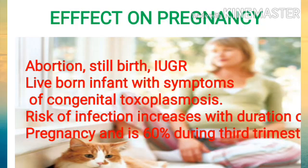The effect of toxoplasmosis on pregnancy: it either causes abortion, stillbirth, or intrauterine growth retardation. If the lady gives birth to a live-born infant, that infant is affected with congenital toxoplasmosis and shows the signs and symptoms of congenital toxoplasmosis.